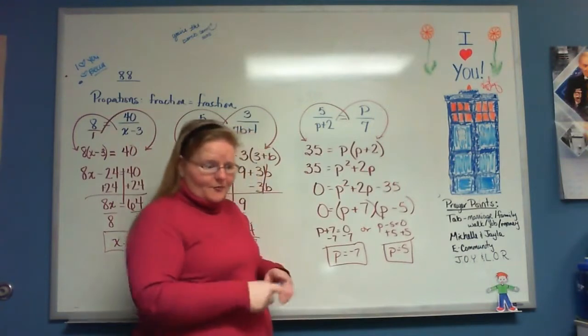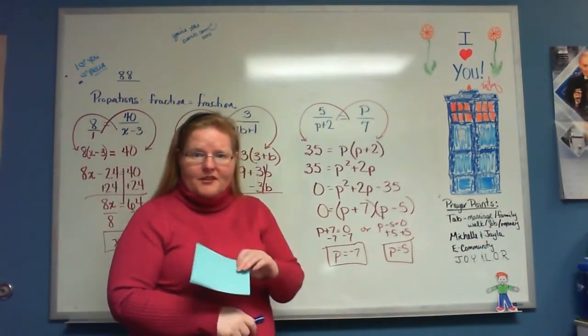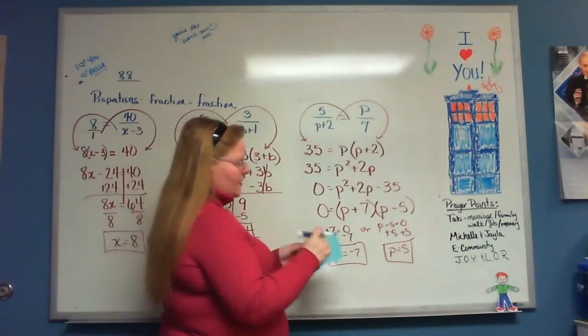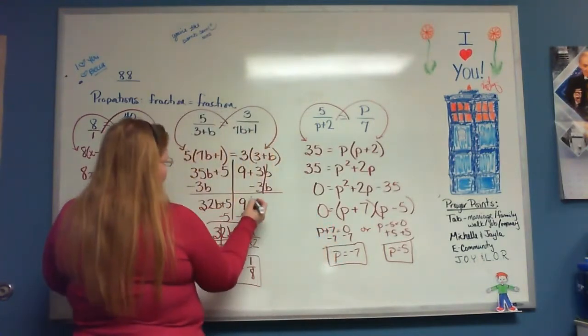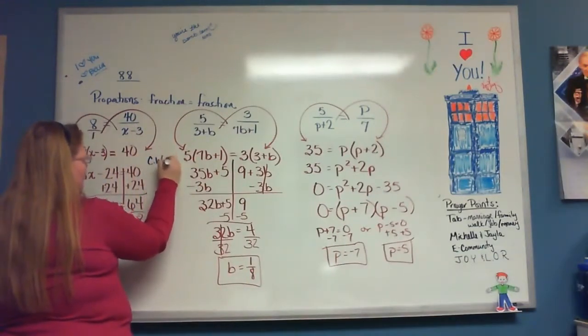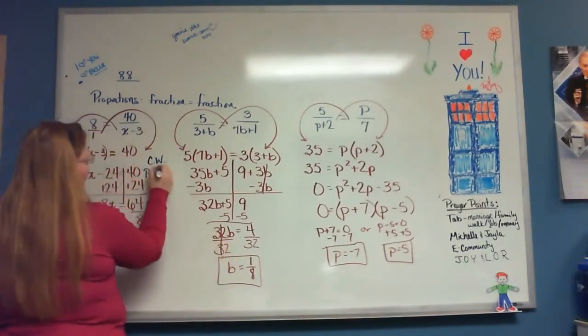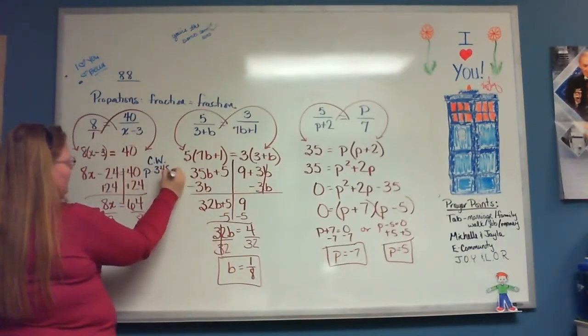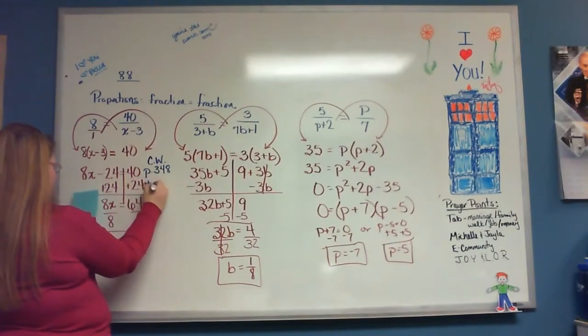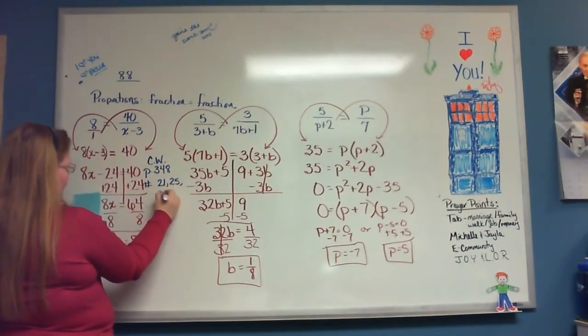So. Classwork and homework. Simple. Quick. Easy. Should be fun. Piece of cake. Just saying. Do it here. Page 248. Sorry. 348. Numbers 21, 25, 31, and 35.